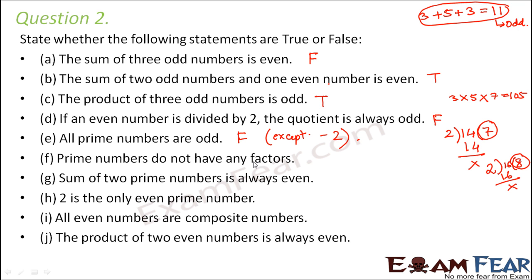Prime numbers do not have any factors. That is absolutely false because prime numbers have two factors every time. And what are those two factors? One and itself.